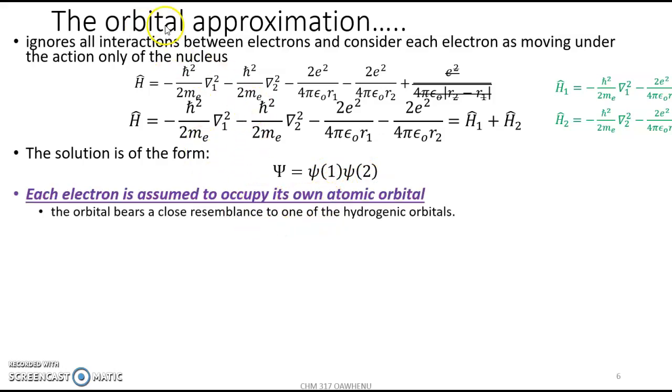This is the statement of the orbital approximation, that each electron is assumed to occupy its own atomic orbital. Recall that the wave function for the hydrogen atom is called an atomic orbital. Each electron is assumed to occupy its own atomic orbital. And this atomic orbital bears a close resemblance to that of the hydrogenic orbital. That's the statement of the orbital approximation.